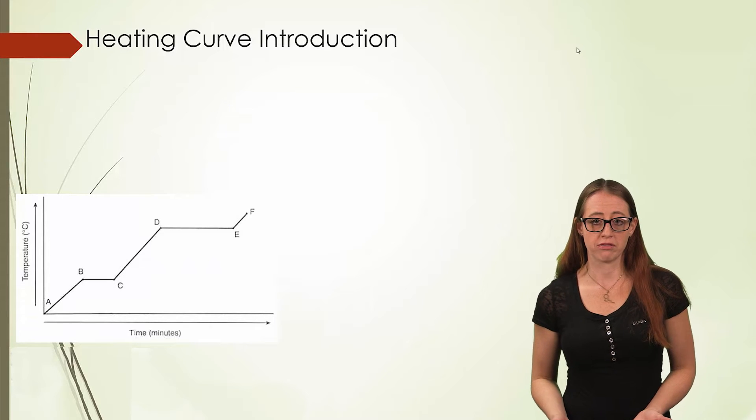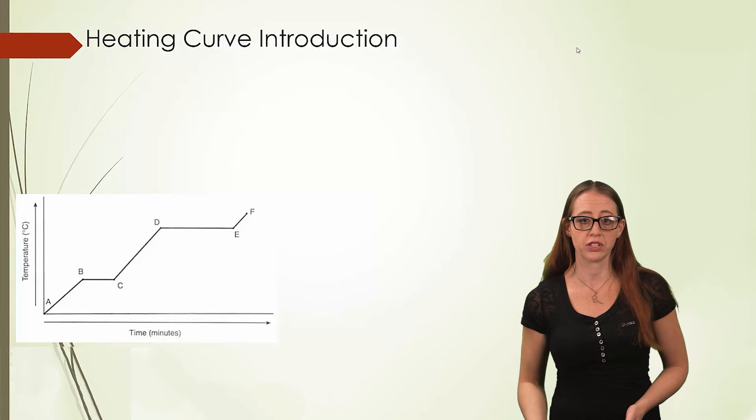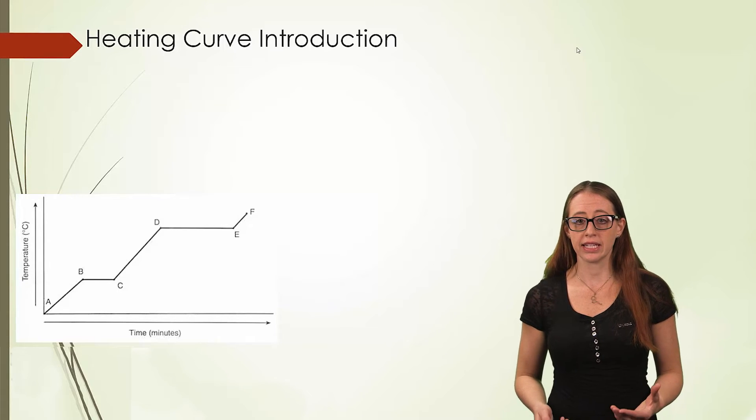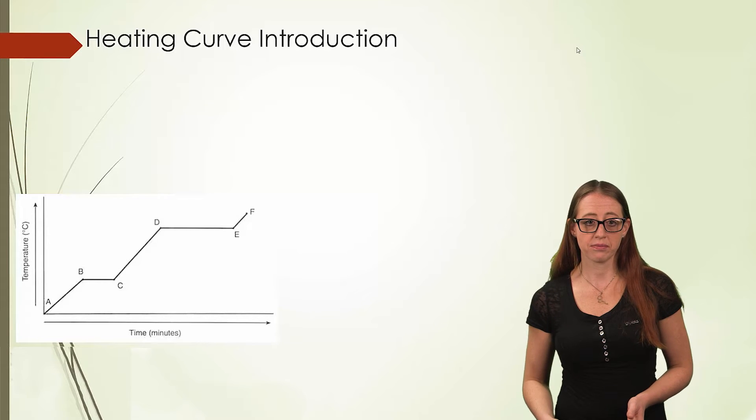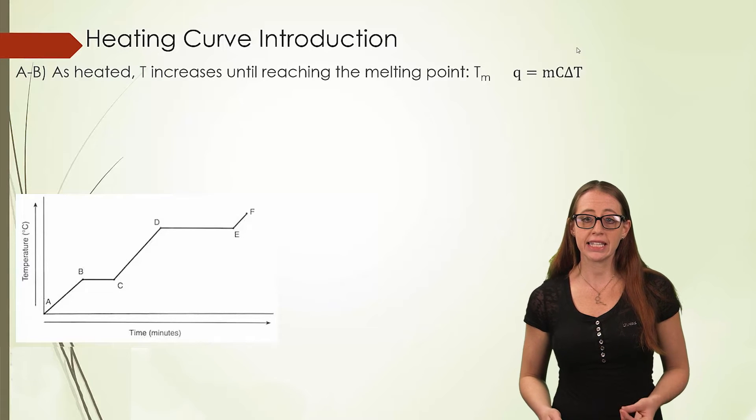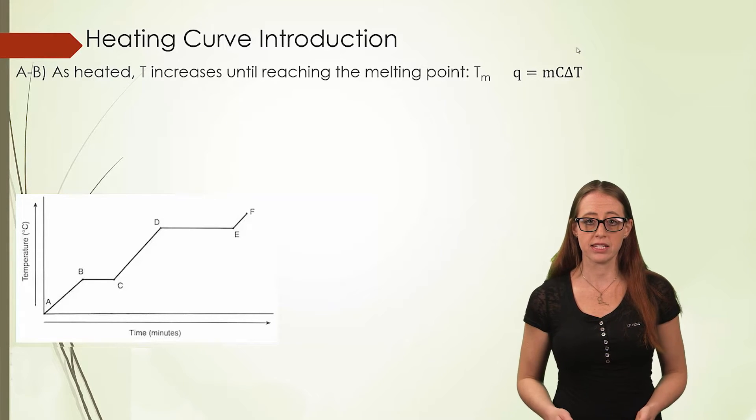So, let's talk about this in equation form, and here I'll put up the graph so that we can relate these to the different portions of the graph. We have equations that relate each of these sections. Let's start with from A to B. From A to B, we are heating a solid, and so we use our Q equals MC delta T formula.